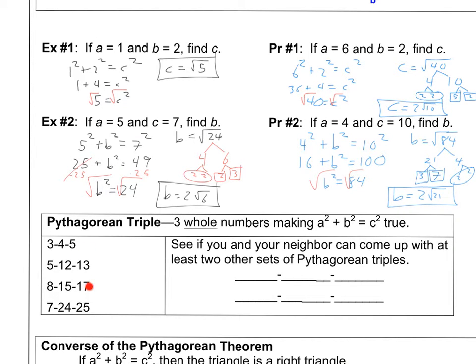Okay. Some of those examples are here. 3, 4, 5. 5, 12, 13. 8, 15, 17. 7, 24, 25. You could try these if you want real quick. Plug them into a squared plus b squared equals c squared and see if these work. They will. They'll work perfectly as long as you do the bigger number as the c every time.